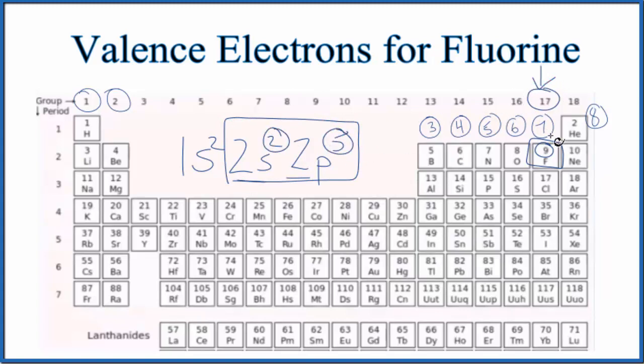And that's what we found before. This is Dr. B with the number of valence electrons for the fluorine atom. Thanks for watching.